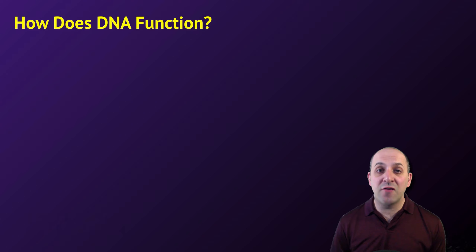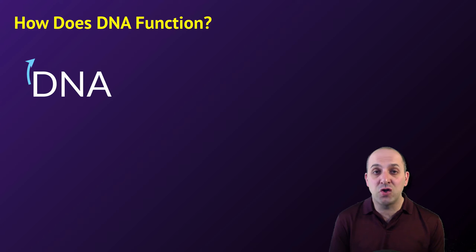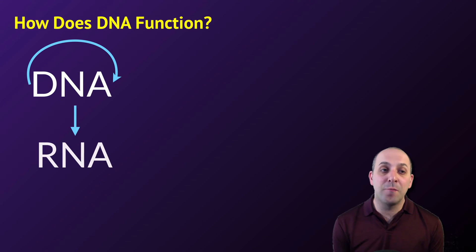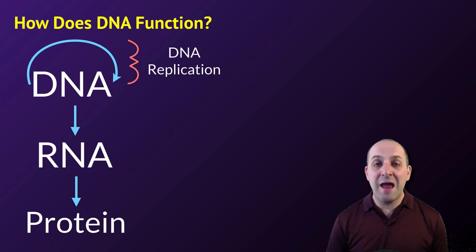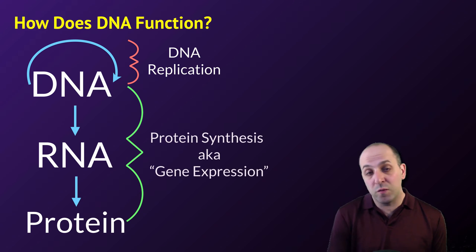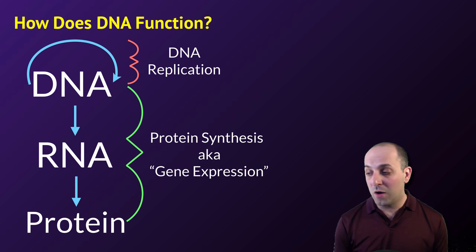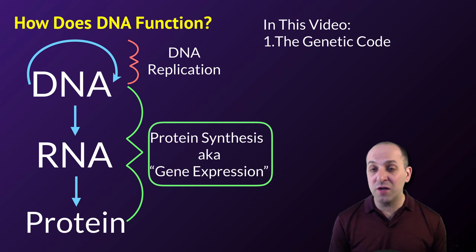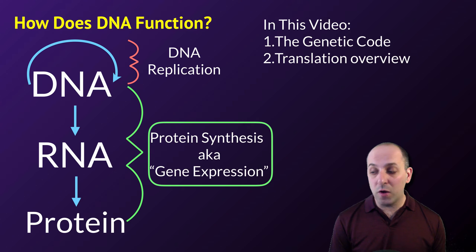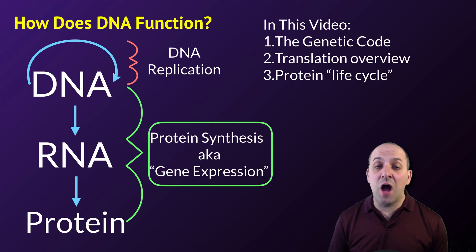The main question that we're answering in these videos is how does DNA function in cells? We've already addressed the means by which DNA copies itself — the process referred to as DNA replication — and now we're looking at the way in which the information in DNA is used to produce proteins, which is referred to as protein synthesis or gene expression. In this video, we're going to focus on the genetic code, how the information is actually used by the cell, and then we're going to provide an overview of translation as a process with some final discussion on the life cycle of proteins inside of cells.